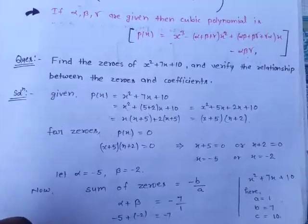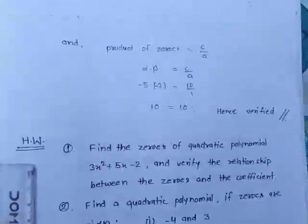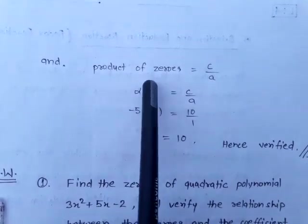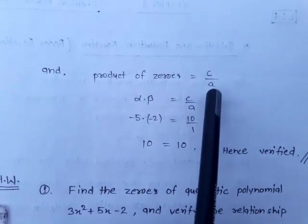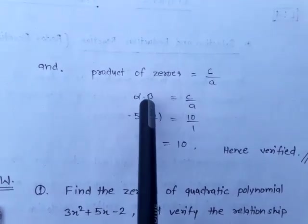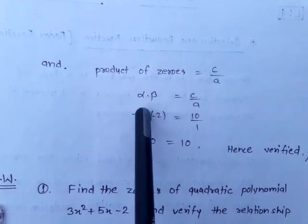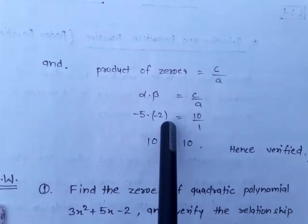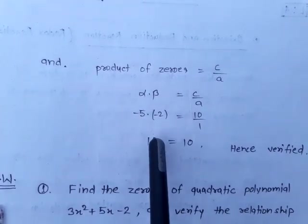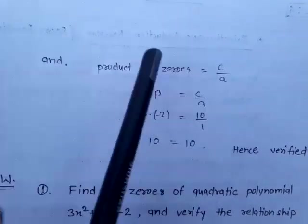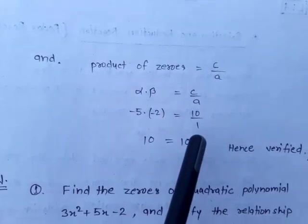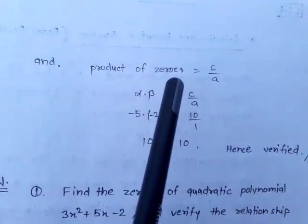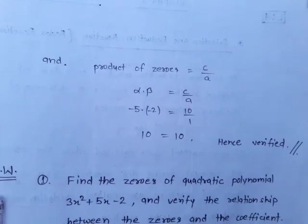Next we verify the product of zeros. The pattern is c/a. Alpha × beta = (–5) × (–2) = +10. And c/a = 10/1 = 10. Since 10 = 10, the product of zeros is also verified. Hence verified. This is the pattern for solving such questions.